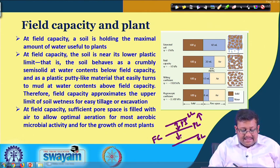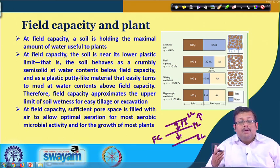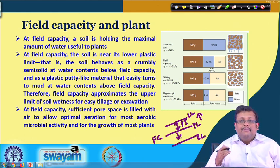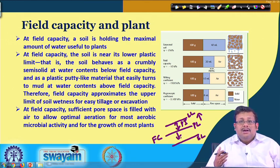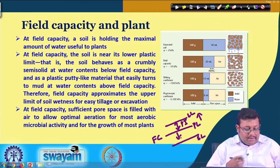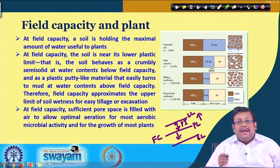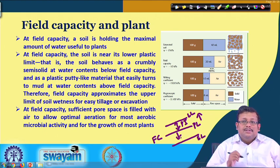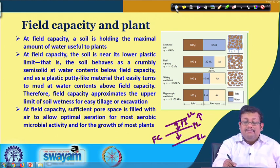For tillage, field capacity approximates the upper limit of soil wetness — we should not apply water beyond field capacity before tillage because it produces mud and resists tillage operations. All tillage operations should be done below field capacity. At field capacity, sufficient pore space is filled with air to allow optimum aeration for most aerobic microbial activity and for the growth of most plants.